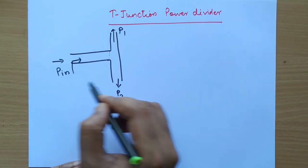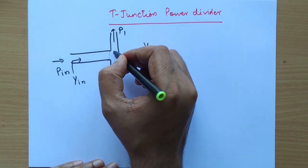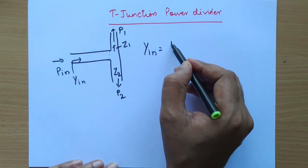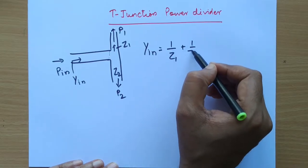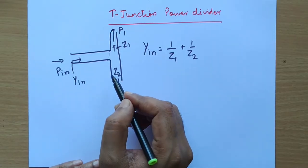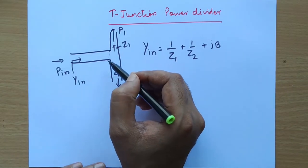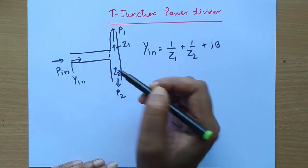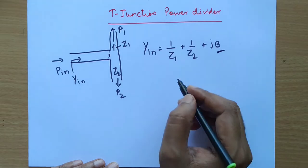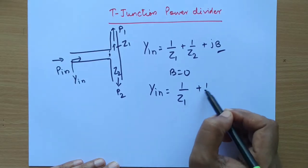We can find the input admittance as follows: if the impedance of one branch is Z1 and the other is Z2, we can write the input admittance as 1/Z1 + 1/Z2, which is the admittance of these two branches connected in parallel at the junction. There will also be a small reactance due to junction discontinuity — this is due to junction capacitance. Assuming junction capacitance is zero in the ideal case, the input admittance Y_in becomes 1/Z1 + 1/Z2.